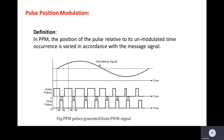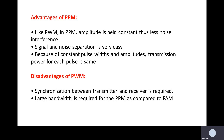Now we will see pulse position modulation. In PPM, the position changes in accordance with the modulating signal, while amplitude and width remain constant. The definition: in pulse position modulation, the position of the pulse relative to its unmodulated time occurrence is varied in accordance with the message signal. Observing the waveform, the first is the modulating signal, the second is the PWM wave, and the third shows PPM pulses where the positions change — which is why it is called pulse position modulation.